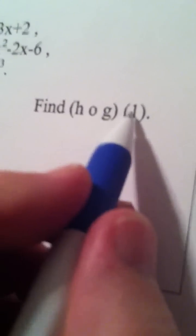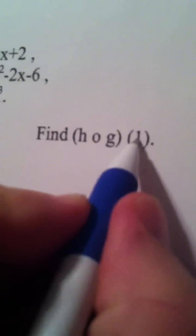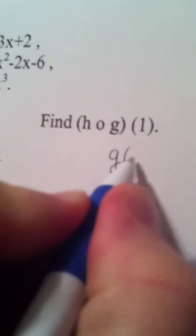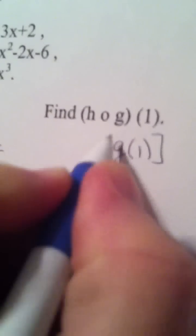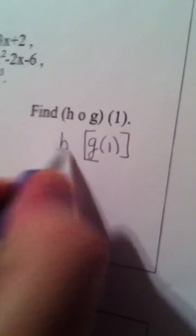h of g of 1. Well, if I'm composing two functions, 1 first goes into g, so we find g of 1, and then that answer gets plugged into h.